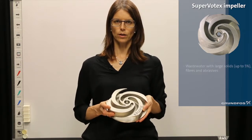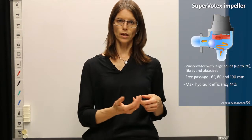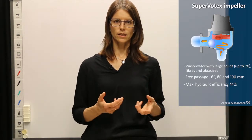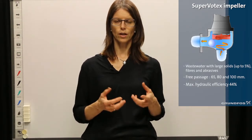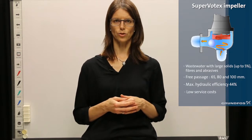Here you see the super vortex impeller offered by Grundfos. This impeller is suitable for wastewater with large solids, fibers and abrasives. It is available with a free passage of 65, 80 and 100 millimeters. The efficiency is quite low compared to the tube impeller — a maximum of 44 percent. However, the non-clogging capabilities are better because the flow of wastewater passes outside the impeller. This means the risk for clogging is low, service visits are reduced, and therefore service costs can be reduced with this impeller.